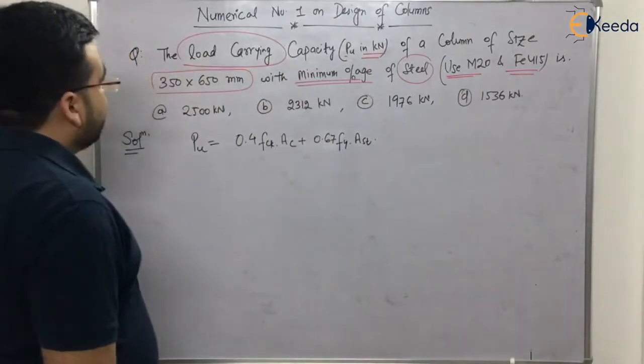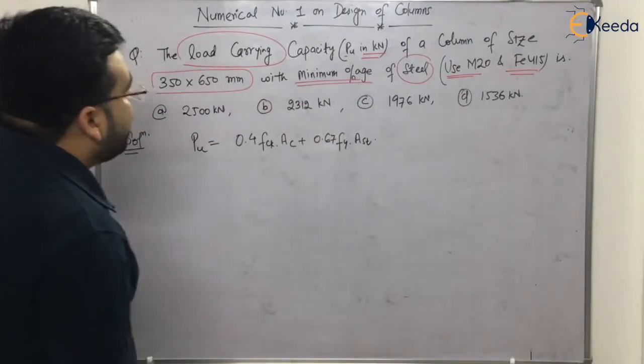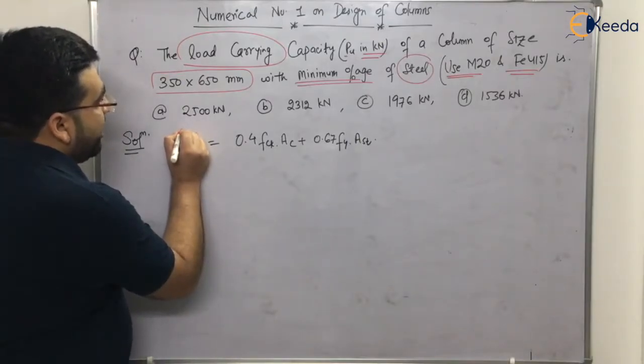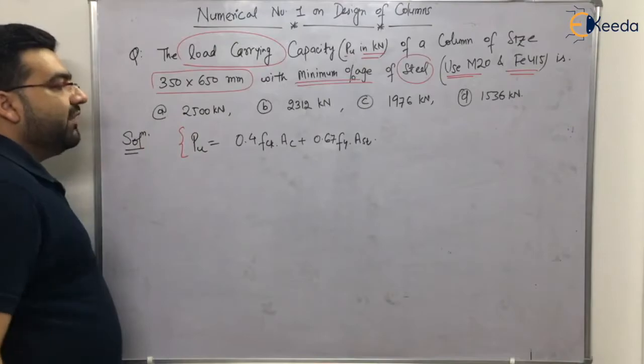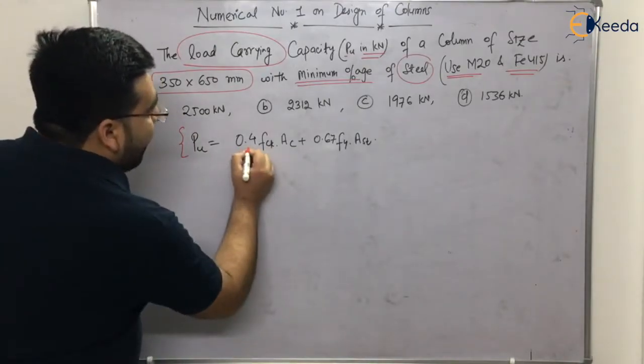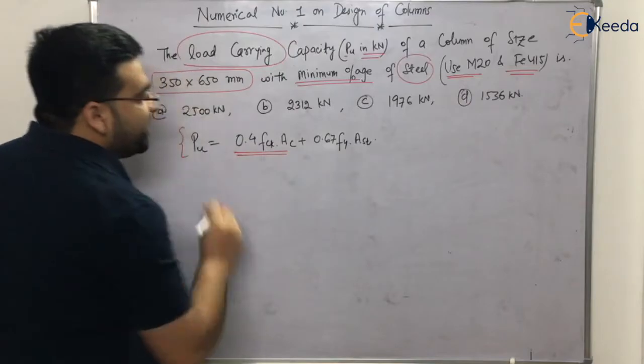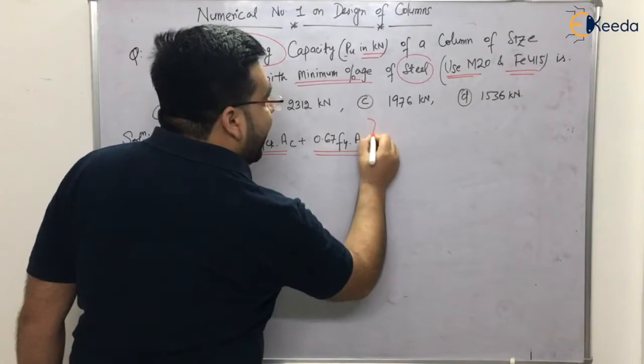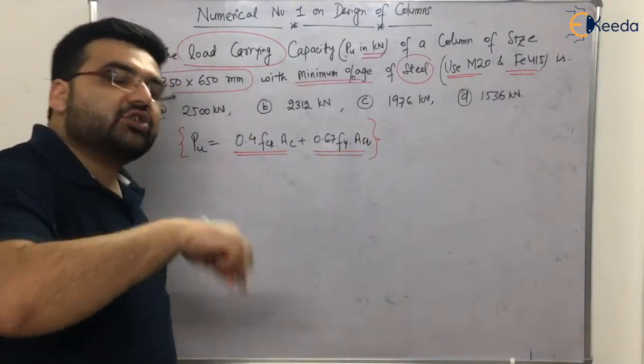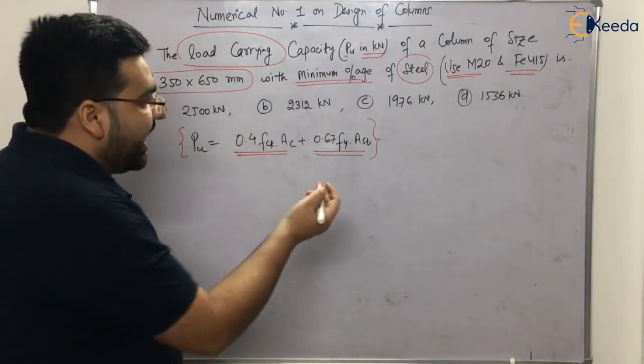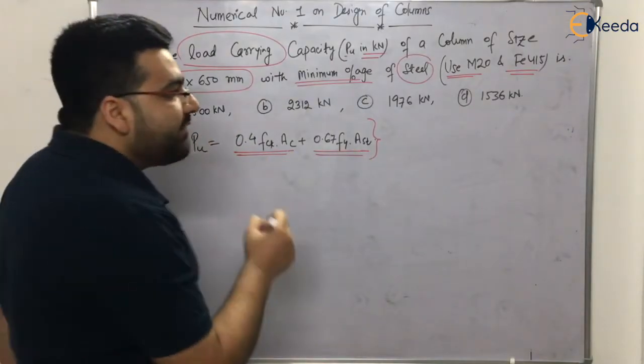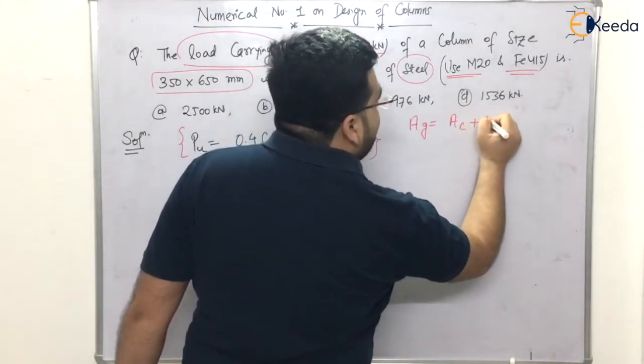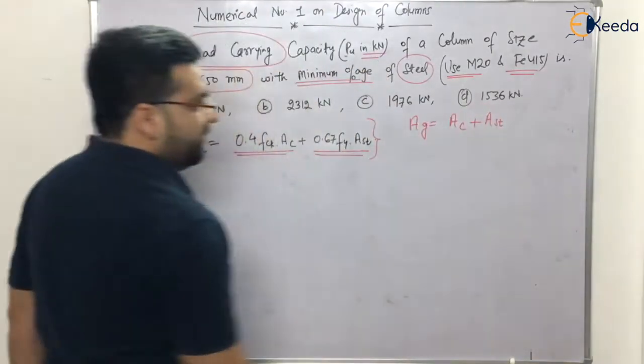Four options are given. Now let us calculate the total load carrying capacity. The load carrying capacity of a column as per IS 456 is given by 0.4 FCK into area of concrete plus 0.67 FY into area of steel. If area of either steel or concrete is not given, then the gross area equals area of concrete plus area of steel.